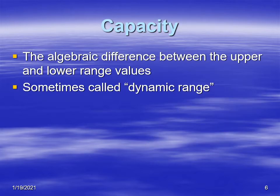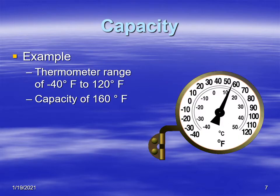Capacity is similar to range in that it measures the distance between the upper and lower values, but it does that in terms of a difference. The difference between the upper value and the lower value is considered the capacity, and sometimes it's called the dynamic range. Going back to our bimetal thermometer, the top was 120 and the bottom was minus 40. The difference between those is 160, so the capacity of this thermometer is 160 degrees Fahrenheit.